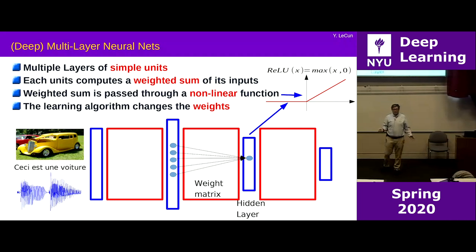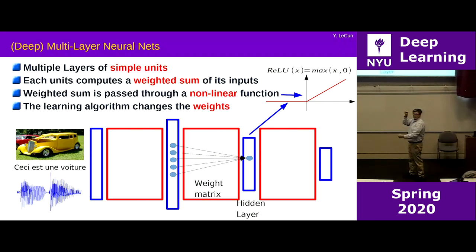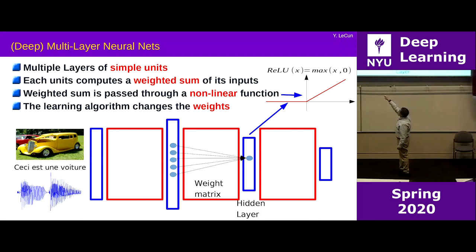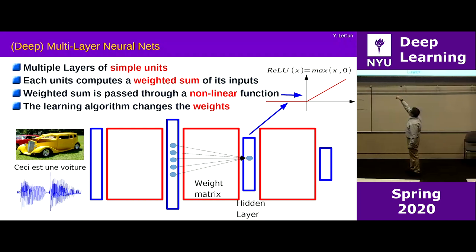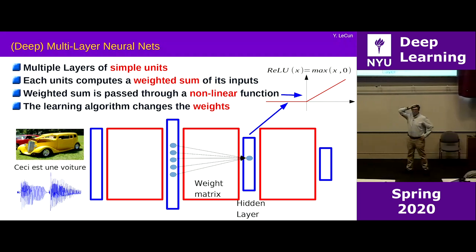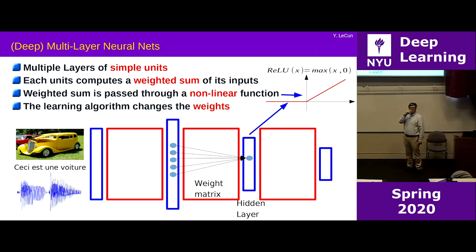Why is this called a neural net at all? Because when you multiply a vector by a matrix, to compute each component of the output you compute a weighted sum of the components of the input by a corresponding row in the matrix. This mimics what a neuron does — the number of units after multiplication by a matrix equals the number of rows of your matrix, and the number of columns has to equal the size of the input.